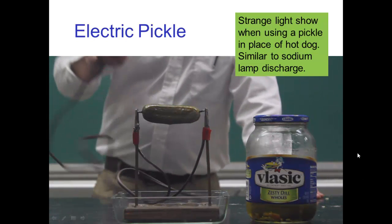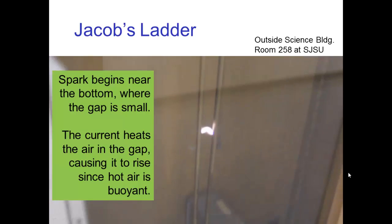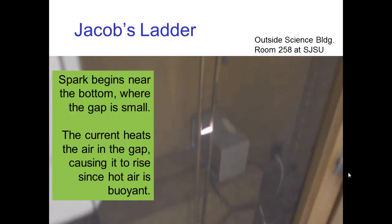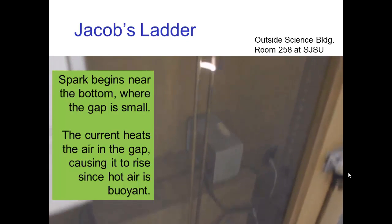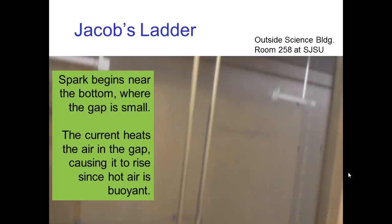This is very similar to a sodium lamp, the kind you might see in parking lots. Here's another example of ohmic heating. In this case, we have a high voltage between the connectors at the bottom that creates a spark, and the spark rises because that ohmic heating makes the air hot. The hot air is buoyant, so the spark rises with the rising hot air from buoyancy.